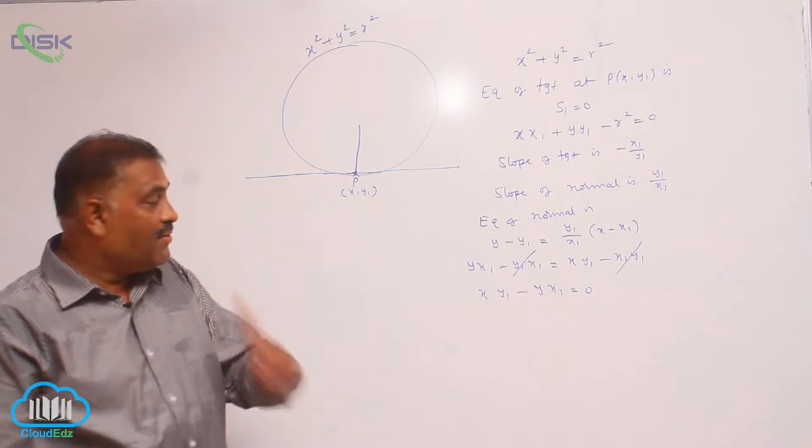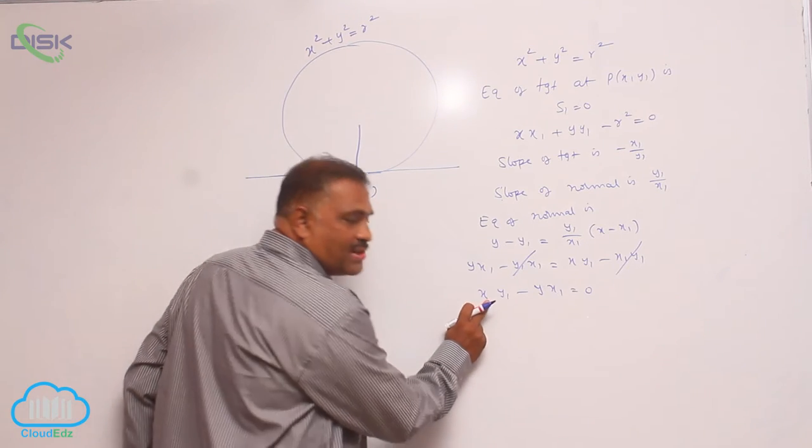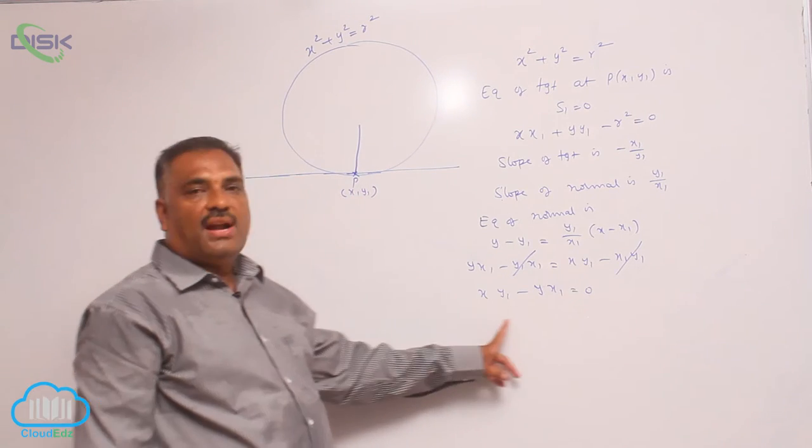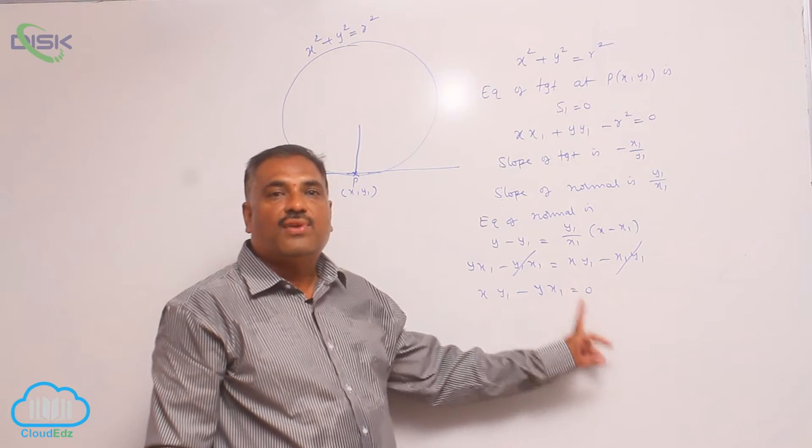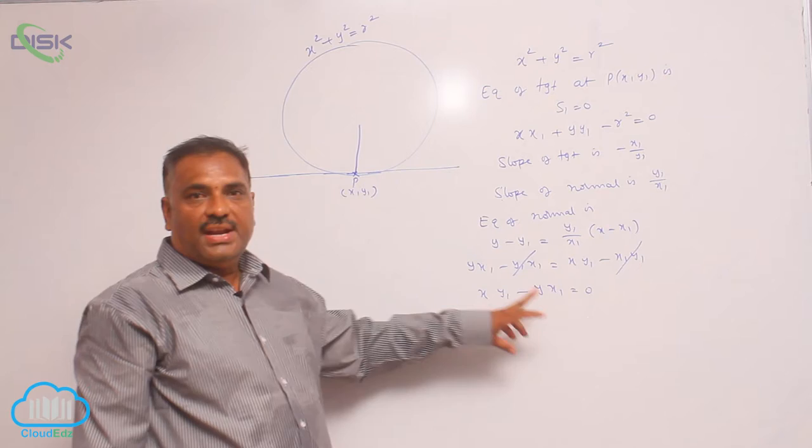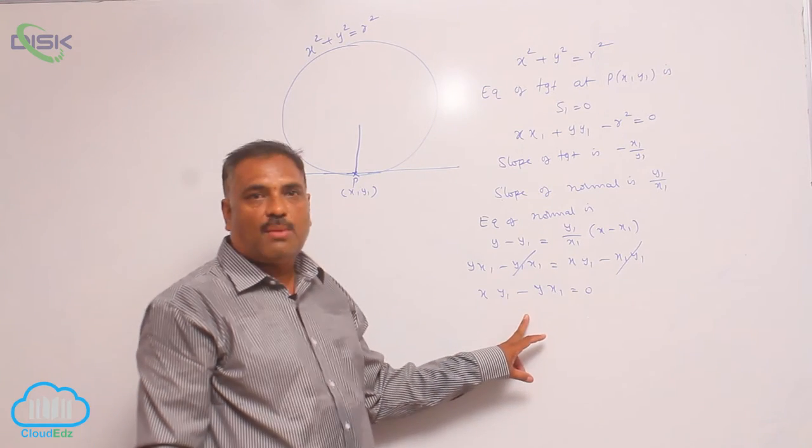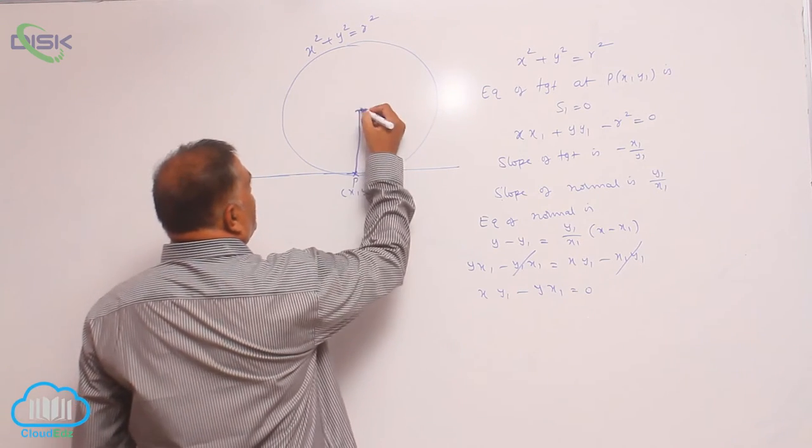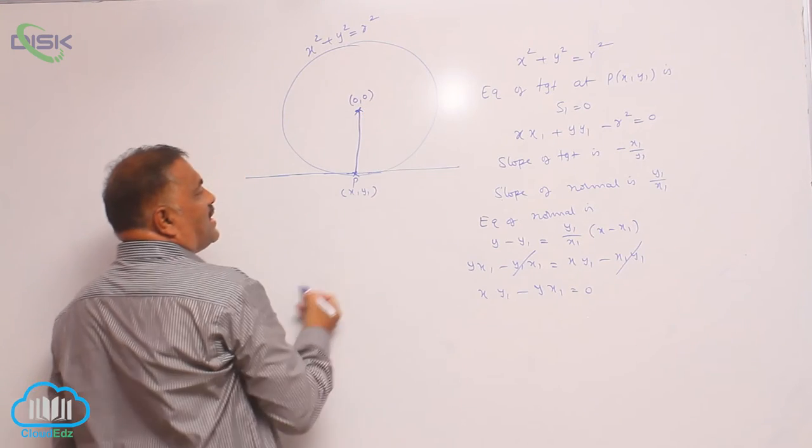We observe one point very clearly that this equation contains x term and y term, absence of constant. Since it contains no constant, it definitely passes through (0, 0). But you know that (0, 0) is nothing but center of the circle.